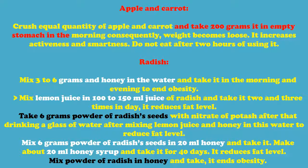Mix 6 grams powder of radish seeds in 20 milliliters of honey and shake it to make a honey syrup. Take about 20 milliliters of it for 40 days to reduce fat level. Mix powder of radish and honey and take it — it ends obesity.